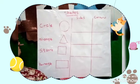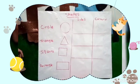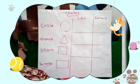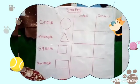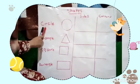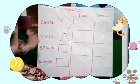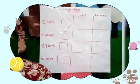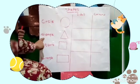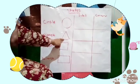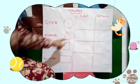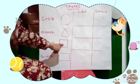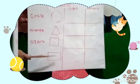Today we will speak about shapes. I will speak English. The first one is a circle. The first one is? Triangle. Square. Rectangle.